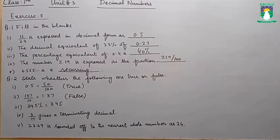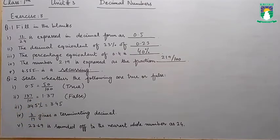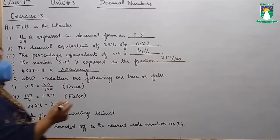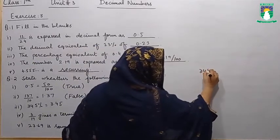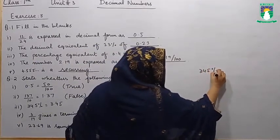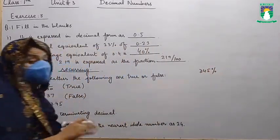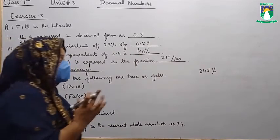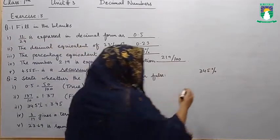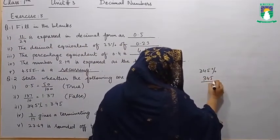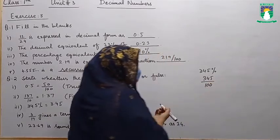Now students, the third statement: is 345% equal to 3.45? We need to state whether it is true or false. We will convert the percentage into the decimal number system. Here we have 345%, and we convert it into a fraction: it can be written as 345 divided by 100.